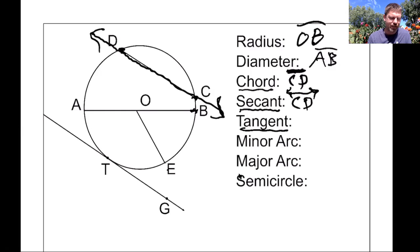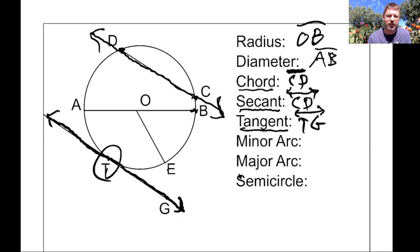A tangent line is just a line that touches a circle in a single point on this circle. TG would be my tangent line because it's traveling along here, just touches it once there and keeps going. The point of tangency would be T because that's where it hits the circle. That's a tangent line.